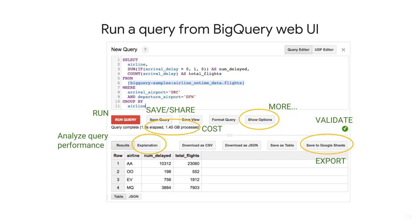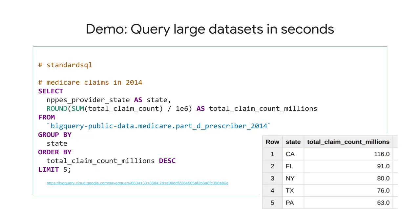Everything that you can do with a web console can also be done with a Python client. Options include the destination BigQuery table, where to cache, et cetera. You'll get to look at this in the lab, but if you want to copy and paste and try out a query, try out the query on the next slide.